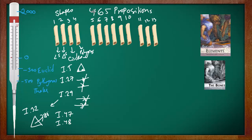Then we have Books 5, 6, and 7. Book 6 deals with similarity — similar figures. Similarity is very, very important. With the concepts of the Pythagorean theorem and similarity, we get trigonometry: the sine ratio, cosine ratio, and tangent ratio. It comes from the concept of the Pythagorean theorem and similarity.